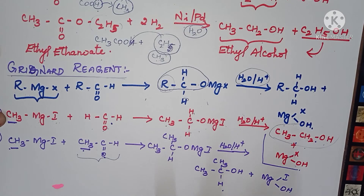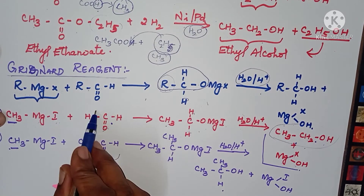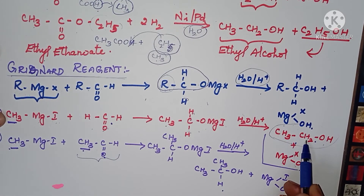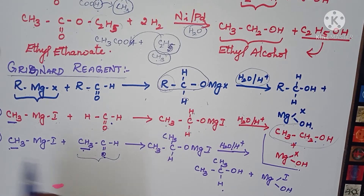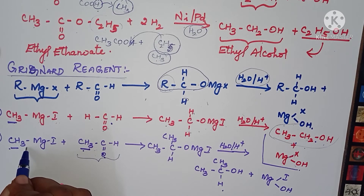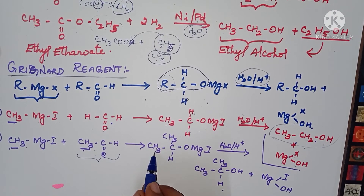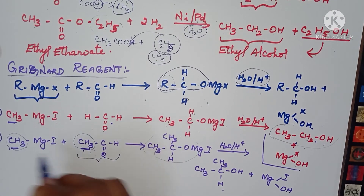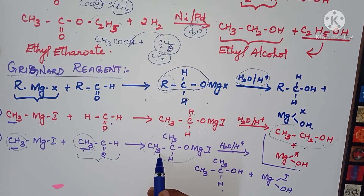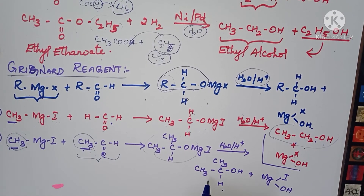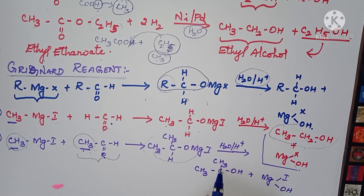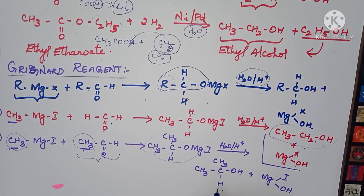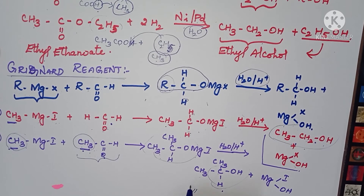Now I am going to take acetaldehyde as example. Acetaldehyde combined with methyl magnesium iodide gives an addition product. Here there are two alkyl groups — one from acetaldehyde and one from the Grignard reagent. Through hydrolysis, the product is CH3-CHOH-CH3, which is a secondary alcohol.